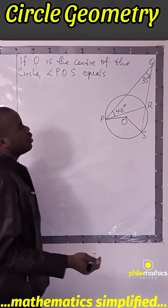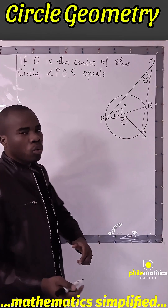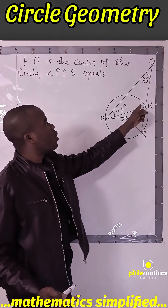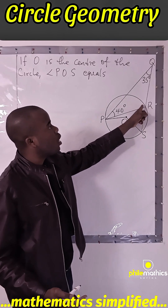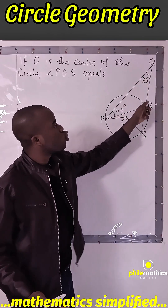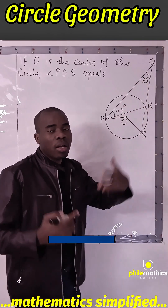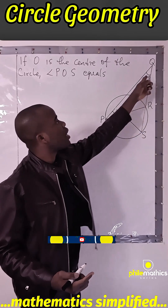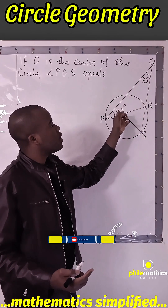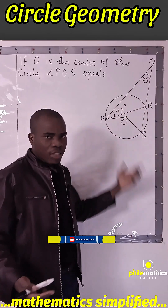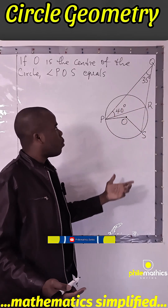Someone can easily go through the long route, which is to find what this angle is, seeing that these angles sum up to 180. And if you subtract this from 180, you get what this is. That's okay.